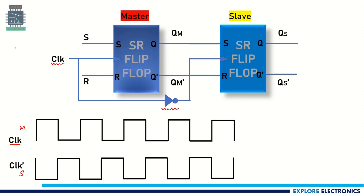We need to understand that this SR flip-flop has been designed for positive edge triggering, meaning it will activate when the positive edge of the clock comes as input and generate the output. But because of the inverted clock given to the slave device, when the master sees a positive edge, the slave will get the positive edge at the negative edge of the main clock.